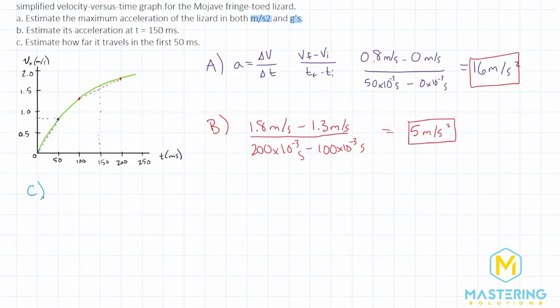And lastly, for part C, they want us to estimate how far the lizard traveled in the first 50 milliseconds. So now since we're going from velocity to distance, we need to find the area underneath the curve. So right here, this whole chunk, we need to estimate what that area is. And that will tell us the distance from a velocity versus a time graph.